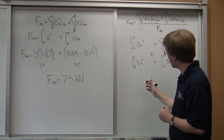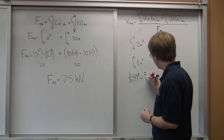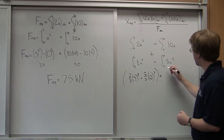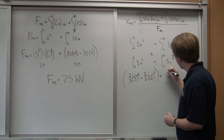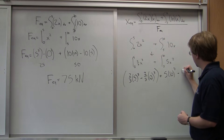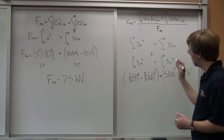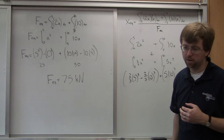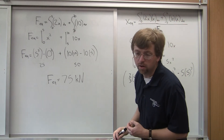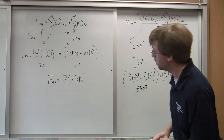Plugging in: from zero to five I have two-thirds times five cubed minus two-thirds times zero cubed. Then from five to ten of five x squared, I have five times ten squared minus five times five squared. This gives me 83.33 for the first part, and three hundred and seventy-five for the second part.